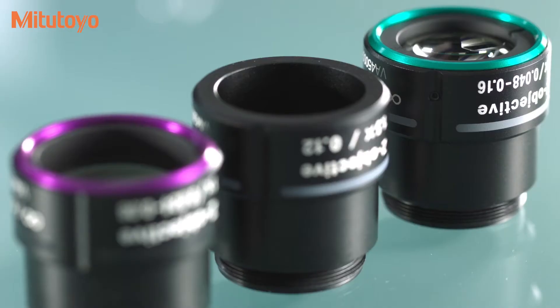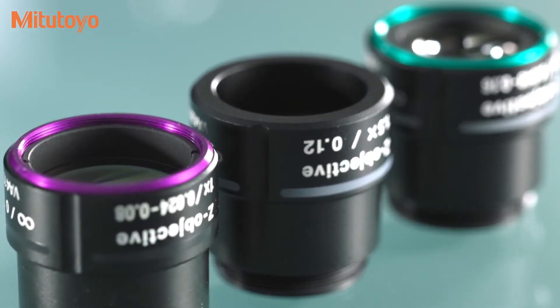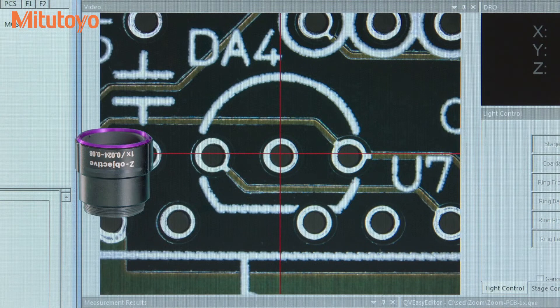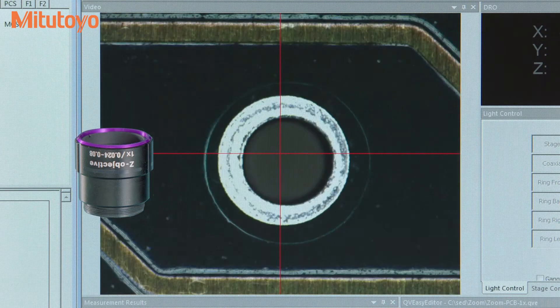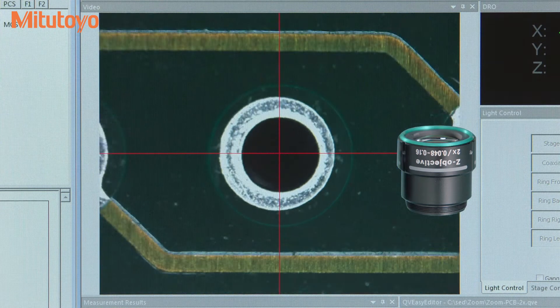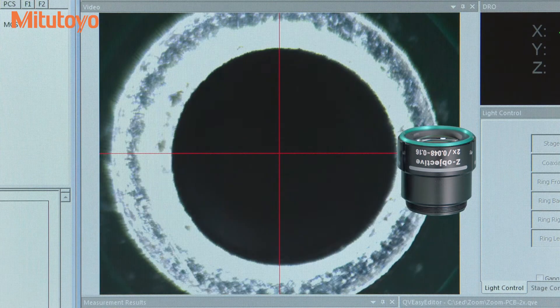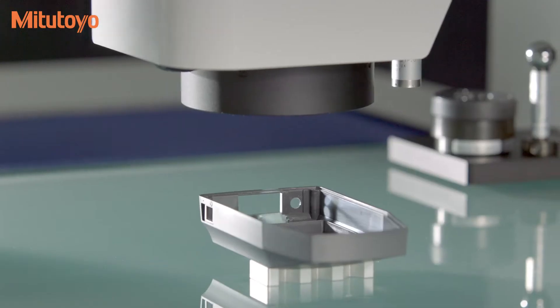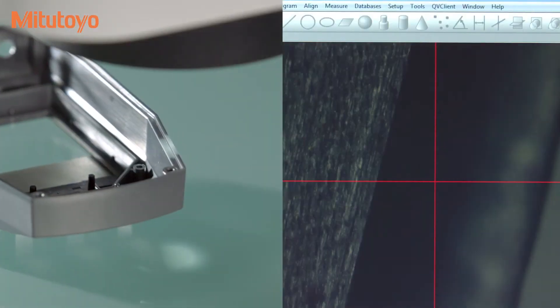The optional 1x objective achieves a magnification range of 0.5x to 3.5x with a working distance of 74mm. The 2x option can achieve a magnification range of 1-7x. The QuickVision Active is available with measuring ranges of 10x8x6 inches or 250x200x150mm.